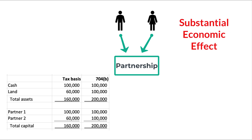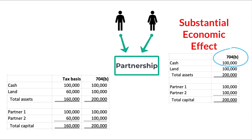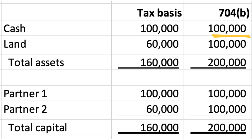If you are familiar with the substantial economic effect rules, you know that substantial economic effect centers around a fair market value balance sheet, also known as the 704B balance sheet. In this example, Partner 1 contributes $100,000 cash to the partnership. Partner 2 contributes land with a fair market value of $100,000 and a tax basis of $60,000. Each partner has a 50% share of profits and losses.